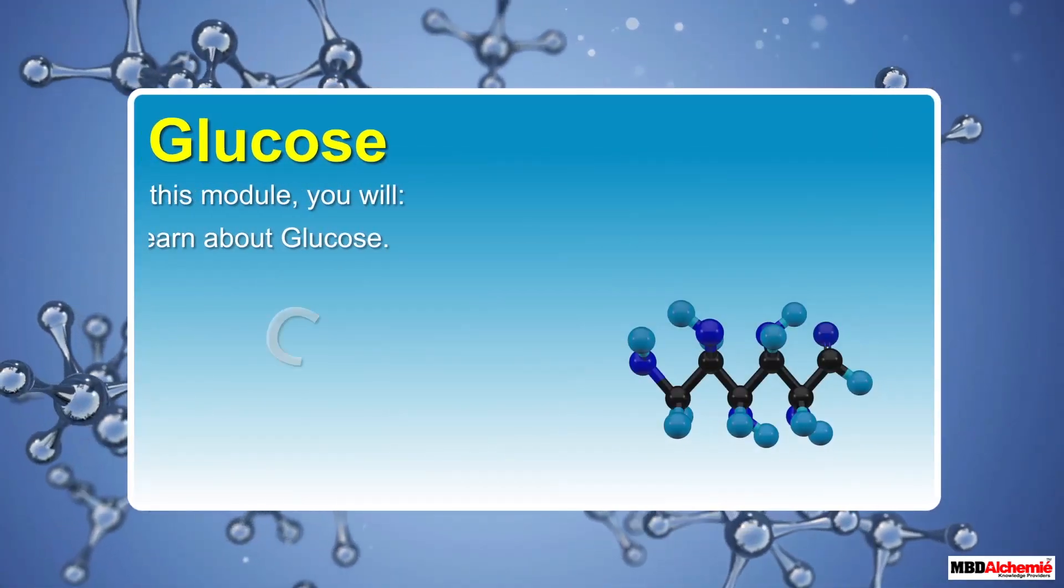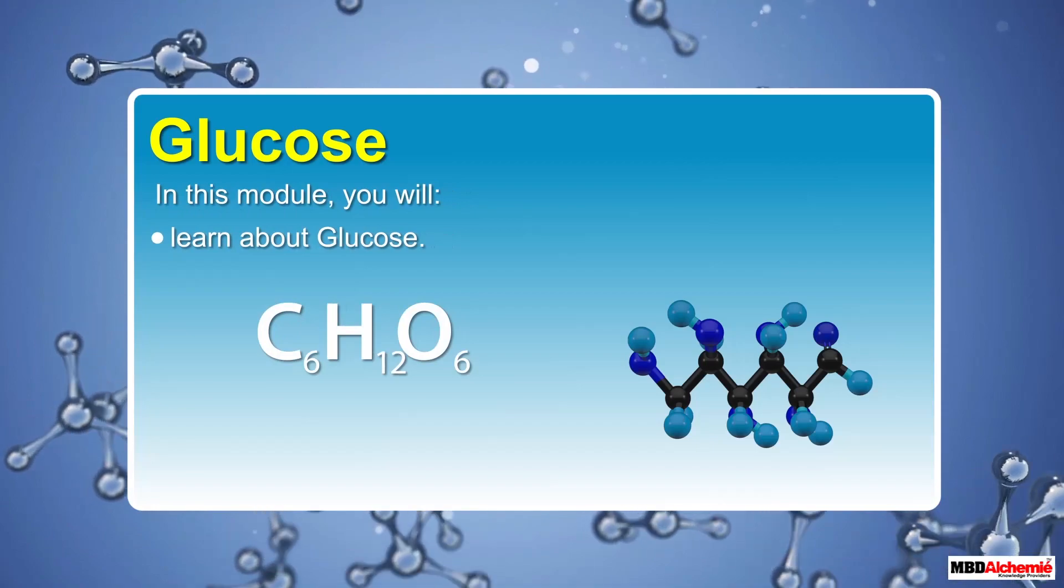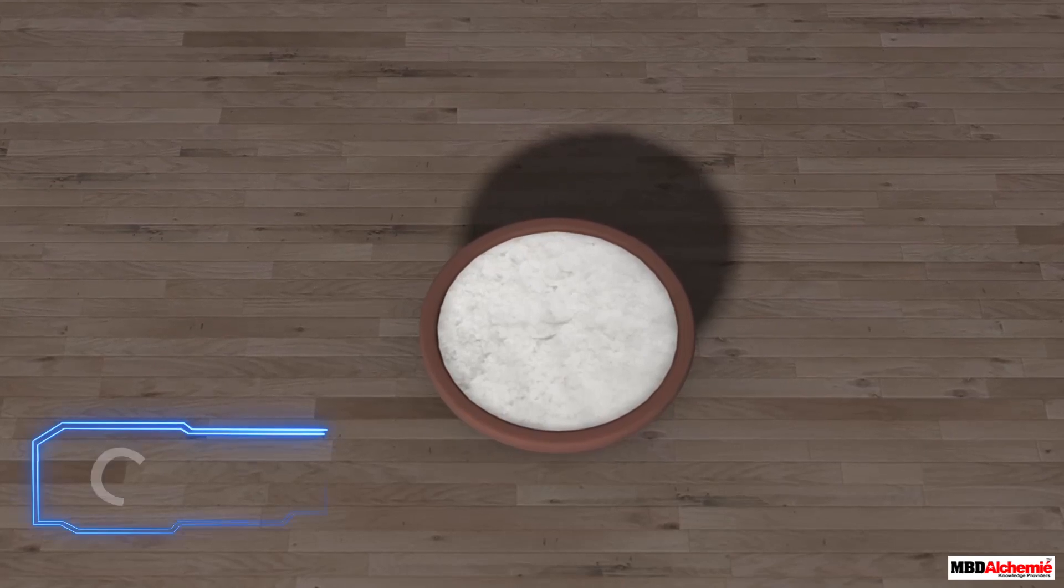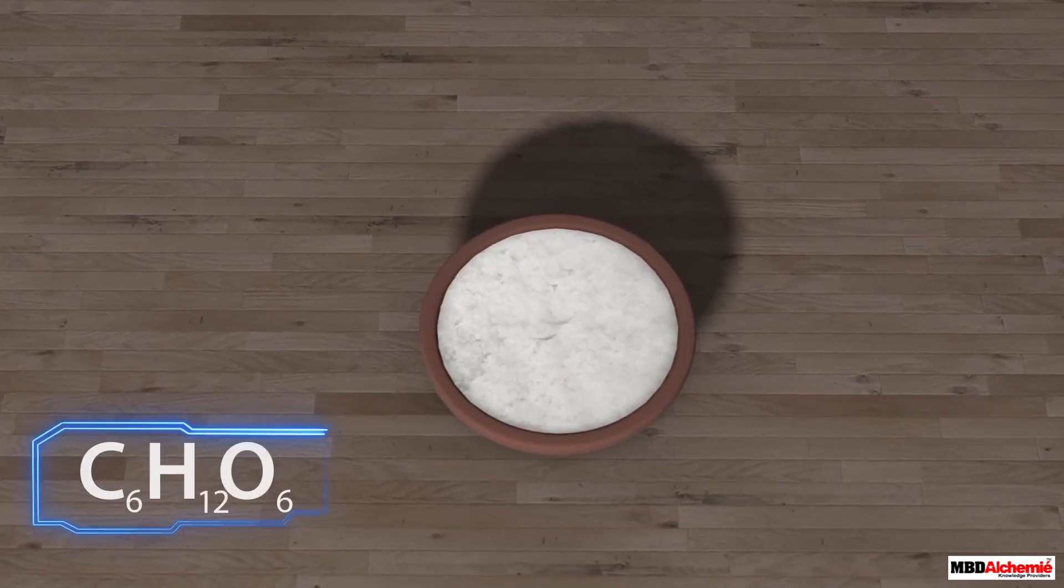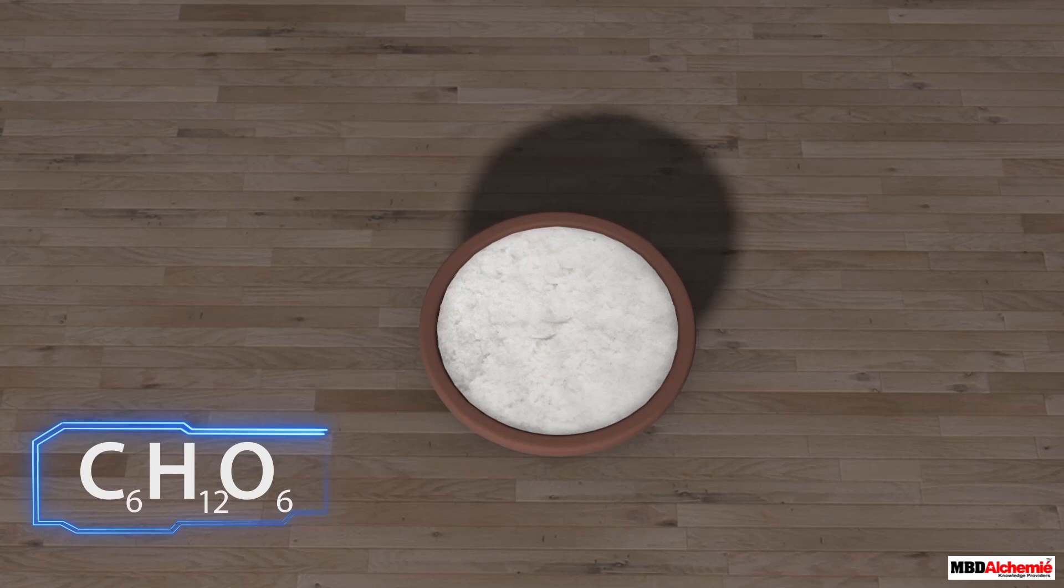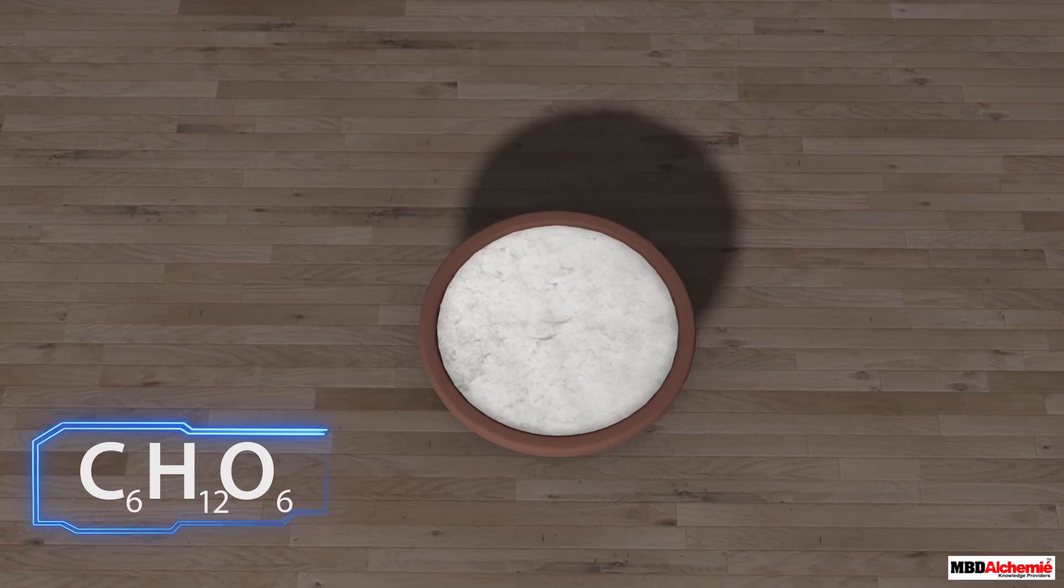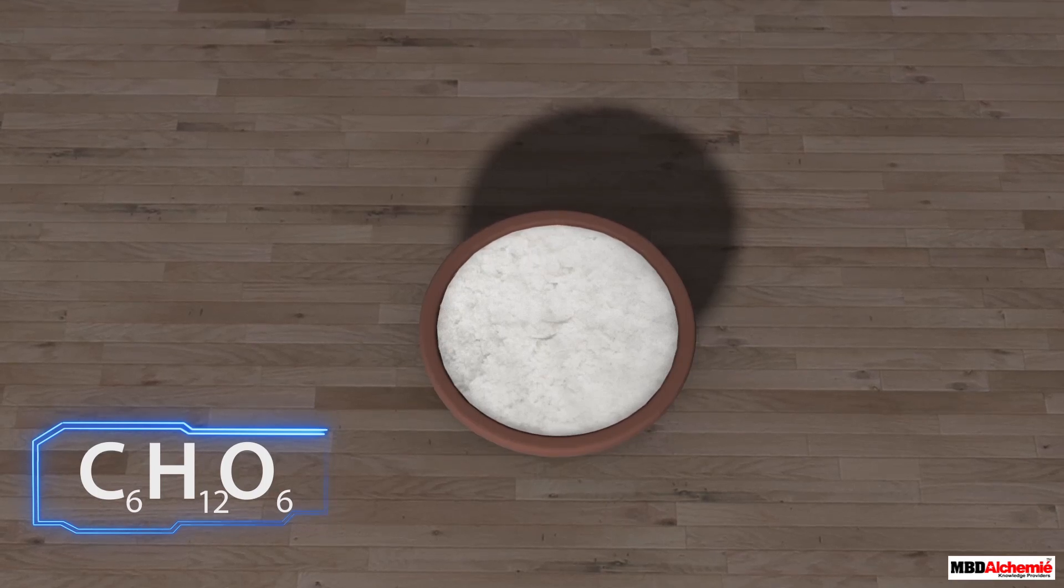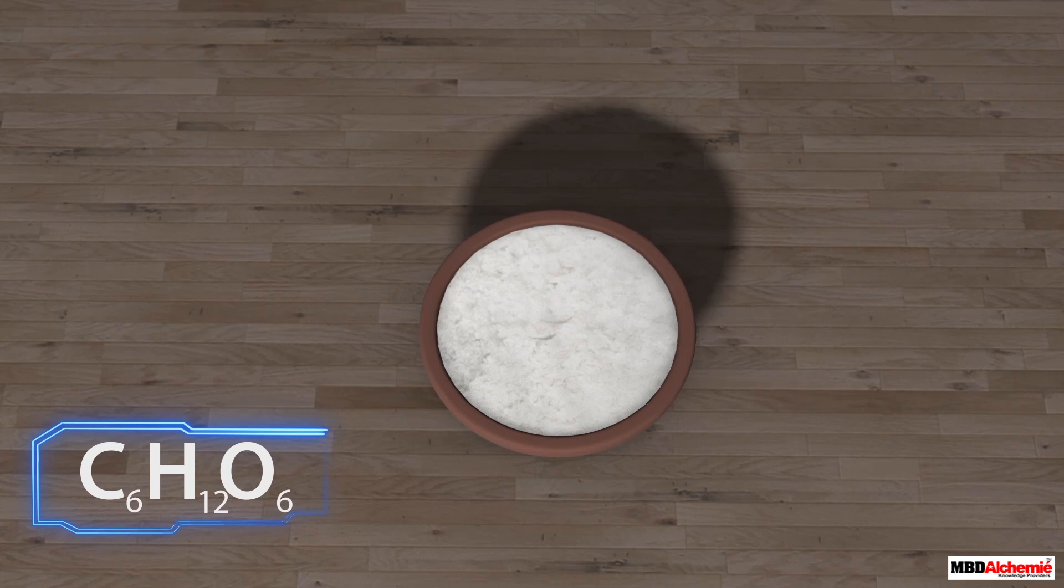In this module you will learn about glucose. Glucose is a monosaccharide with the molecular formula C6H12O6. We all know glucose as the most common and abundant sugar, but the compound we are referring to here is actually one of the stereoisomers of glucose.